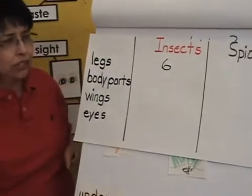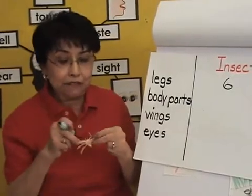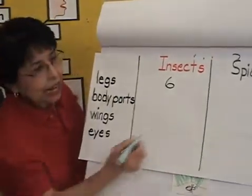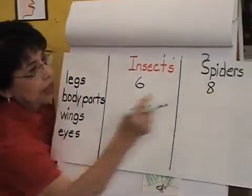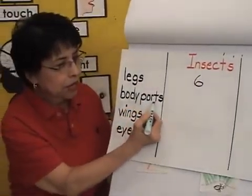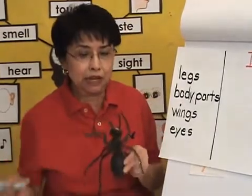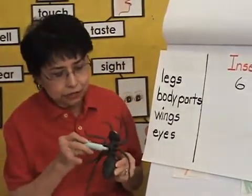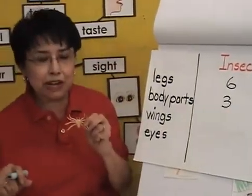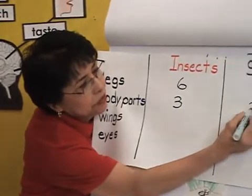Six legs. So I'm going to put six on the chart. Now look at your spider — how many legs did you count? I can even show them the long legs. They have eight legs. Now let's look at body parts. How many body parts does the insect have? I can even bring out my big novelty and you can see the three distinct parts — three body parts. How many parts does a spider have? I see only two here — two body parts. That's correct.